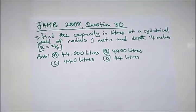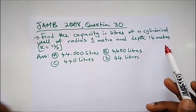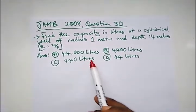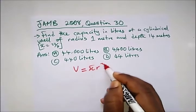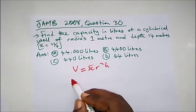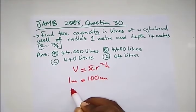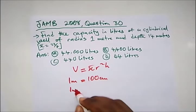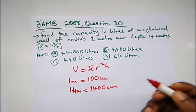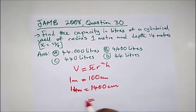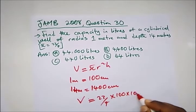We have a final question from JAMB 2008. It says: find the capacity in liters of a cylindrical well of radius 1 meter and depth 4 meters. Our answer is in liters so we need to know our conversion. The volume formula is πr²h. We convert 1 meter to centimeters: 1 meter is 100 cm, and 4 meters is 400 cm.